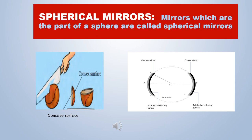What are Spherical Mirrors? Mirrors which are the part of a sphere are called Spherical Mirrors. A spherical mirror is obtained by taking a part of a hollow sphere of glass or metal — like you cut a small piece out of a lemon.